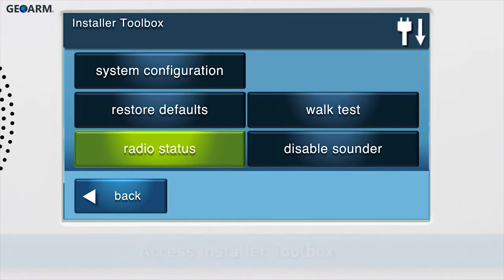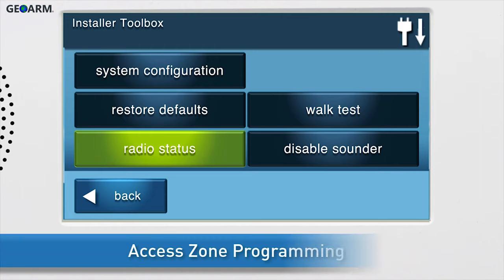You are now in the Installer Toolbox. To access zone programming, press System Configuration.